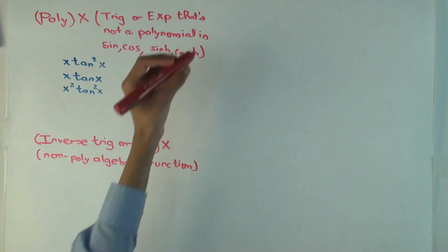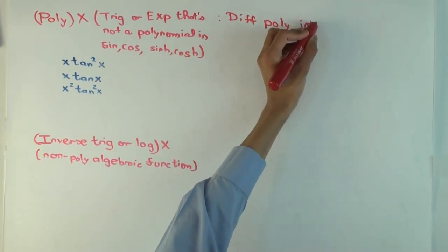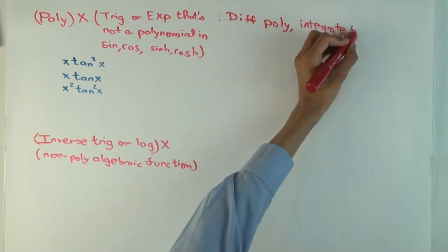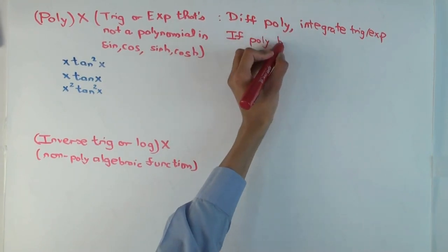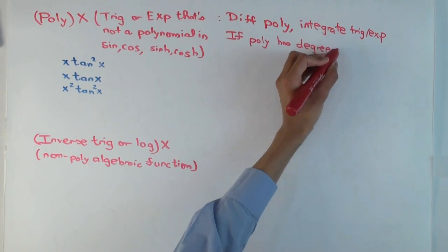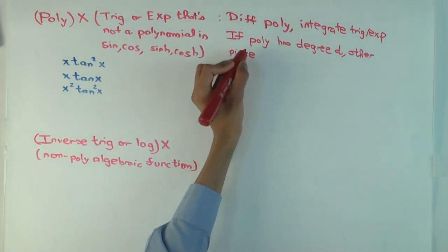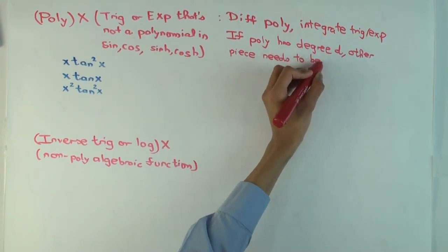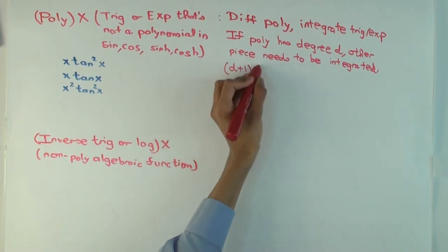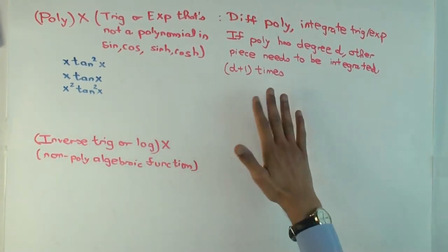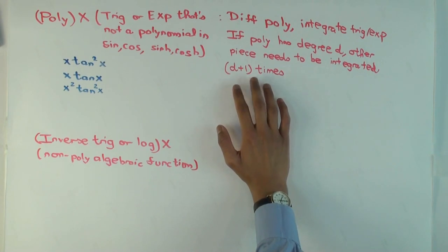Let me make that more precise. The strategy is to differentiate the polynomial and integrate the trigonometric part. If the polynomial has degree d, then how many times do you need to be able to integrate the other piece? d plus one. The other piece needs to be integrated d+1 times. Why d+1? Because that's the number of times it takes for the polynomial to become zero — you apply integration by parts d times, ultimately get a constant, and then there's one more integration for that.